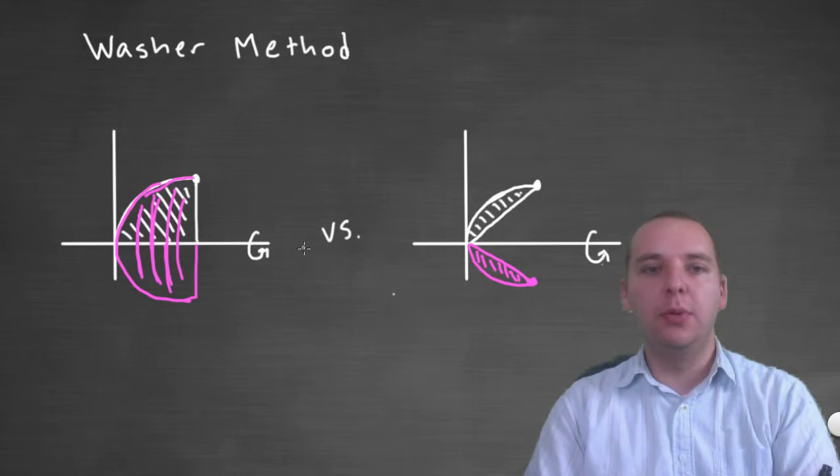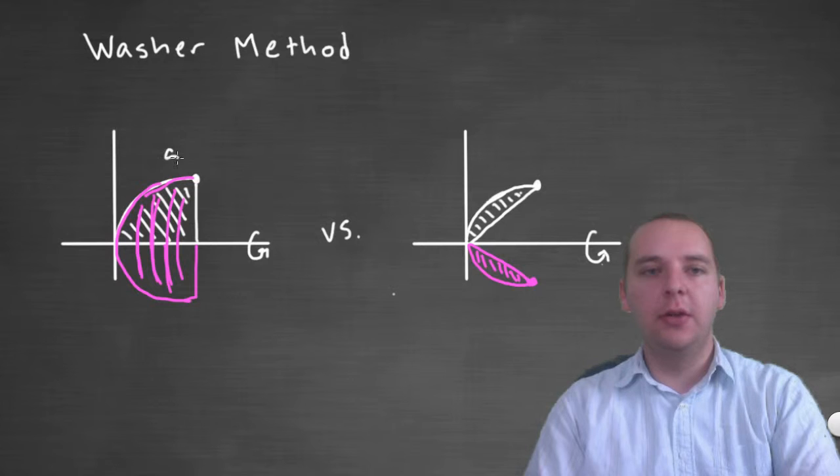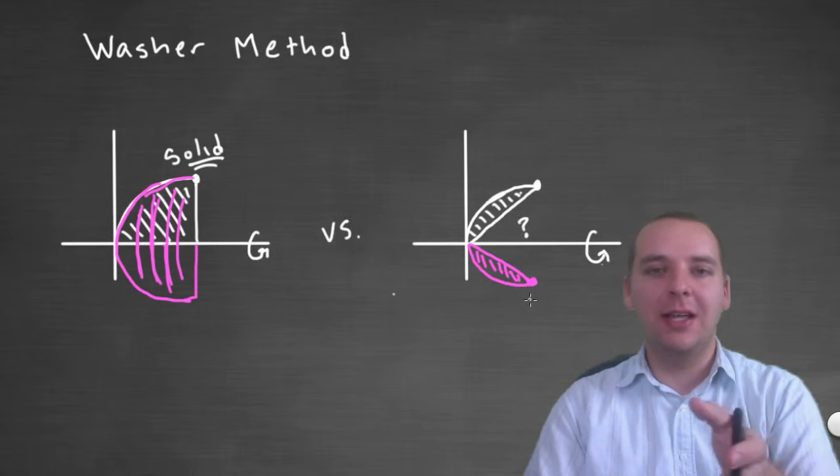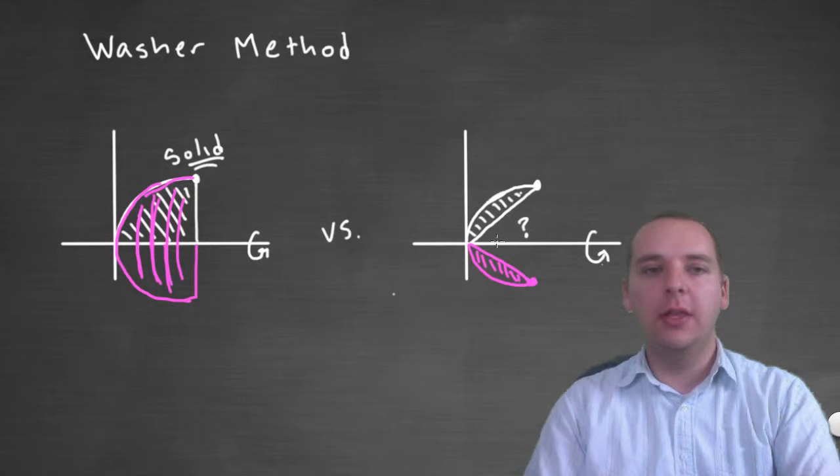So here's the two pictures that we get. This guy, as we said earlier, this is a solid, right? But look at this picture right here. As you revolve this guy around the x-axis, it has a hole in the middle. You see we have this missing space here, and that's going to create some problems when we go to create disks by slicing this guy along the x-axis.